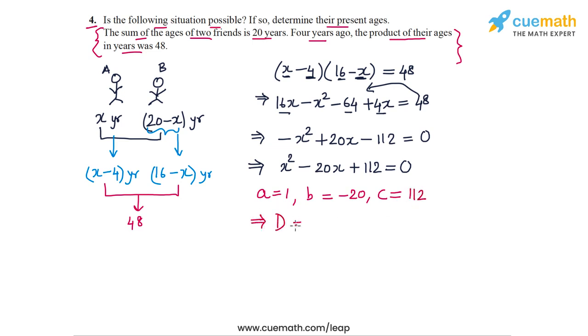So let's calculate the discriminant of this equation. The discriminant is b squared minus 4ac. So this will be equal to minus 20 squared minus 4 times a, which is 1, times c, which is 112. So this is equal to 400 minus 4 into 112 is 448. So 400 minus 448 is minus 48.